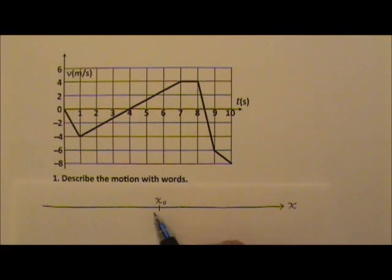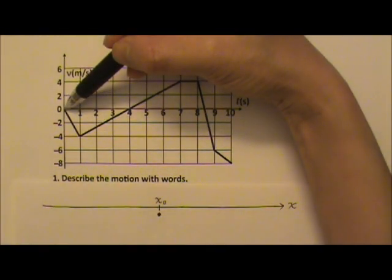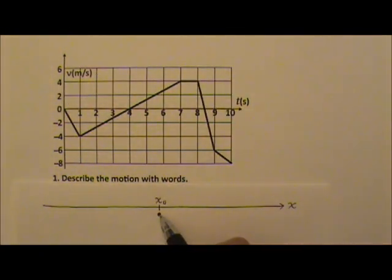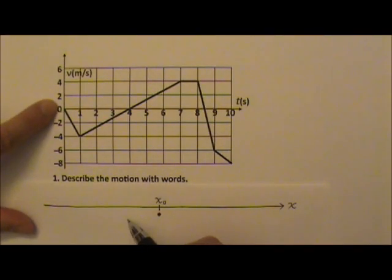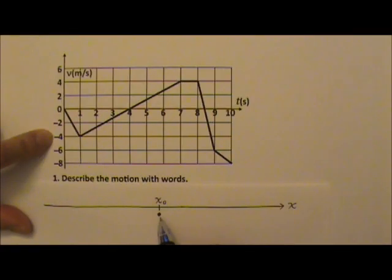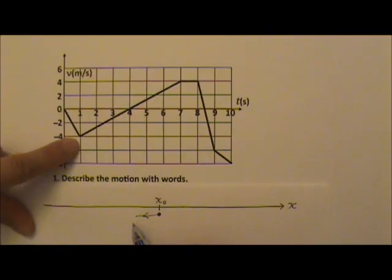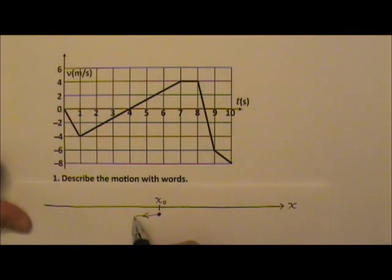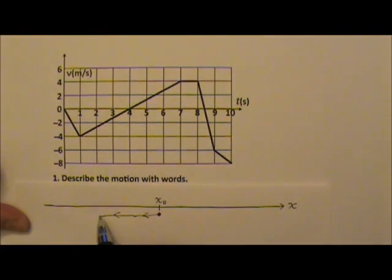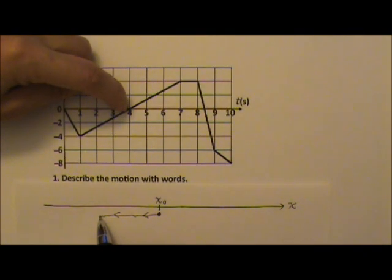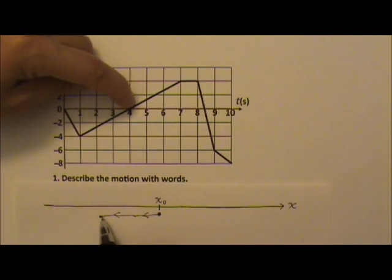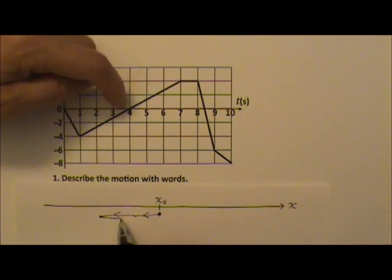Looking at the x-axis, say the object starts at x equals x₀. At first it starts at rest and then speeds up in the negative x direction until it reaches 4 meters per second. Then it continues to move in the negative x direction, but gets slower and slower, slowing down momentarily to 0 meters per second — that's what we call a turning point. At 4 seconds, the velocity changes from negative to positive, meaning the object turns around and now switches direction.